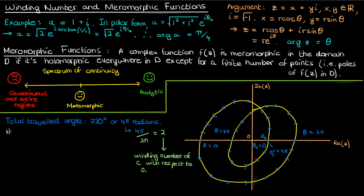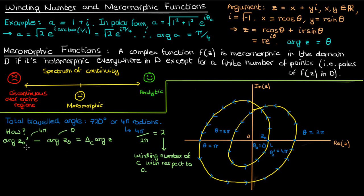Let me go over how we found this winding number. We started at z0, whose argument was 0. We then traveled along the curve until we ended up in our original position. However, our new argument theta0 prime was 4pi because we had traversed 4pi radians around the origin to end back up in our original position. If we divide this change in the argument by 2pi we get the winding number of c with respect to the origin.